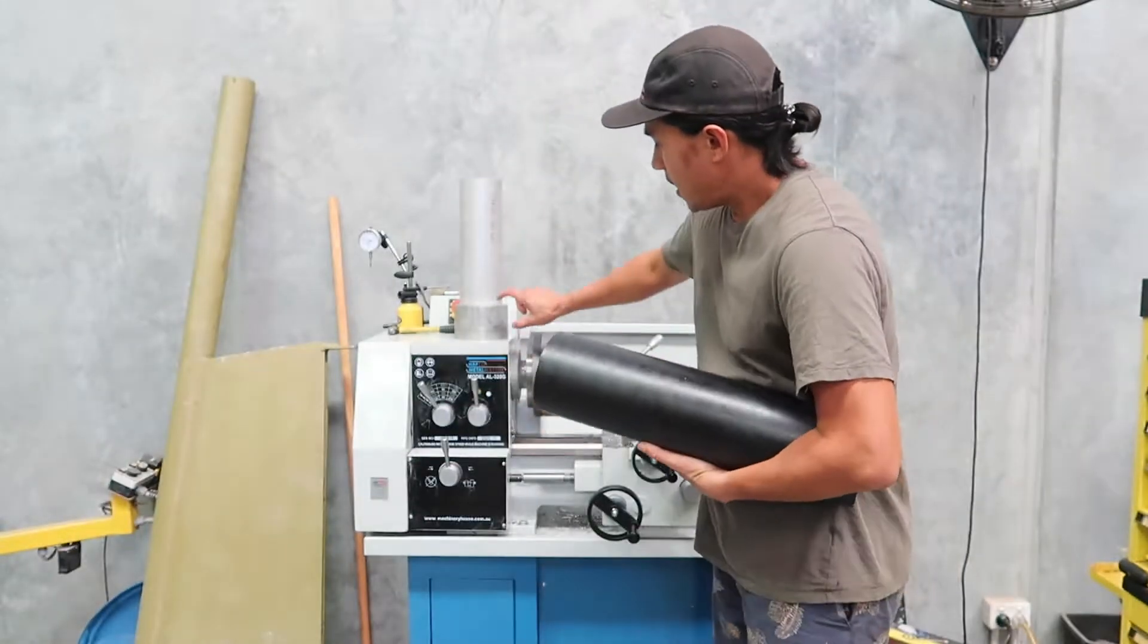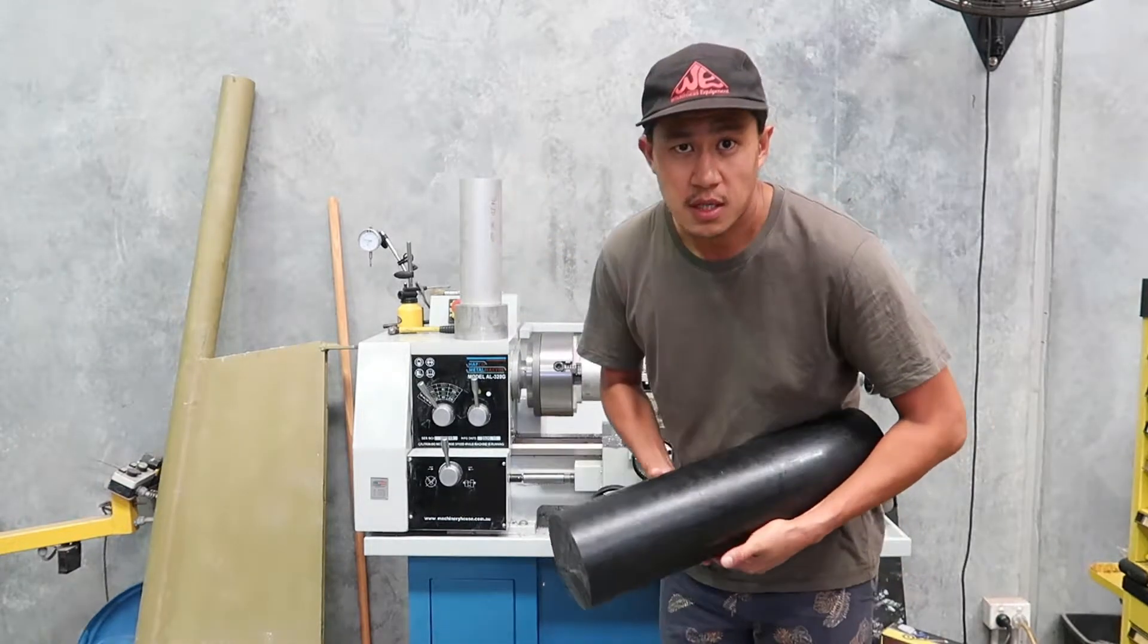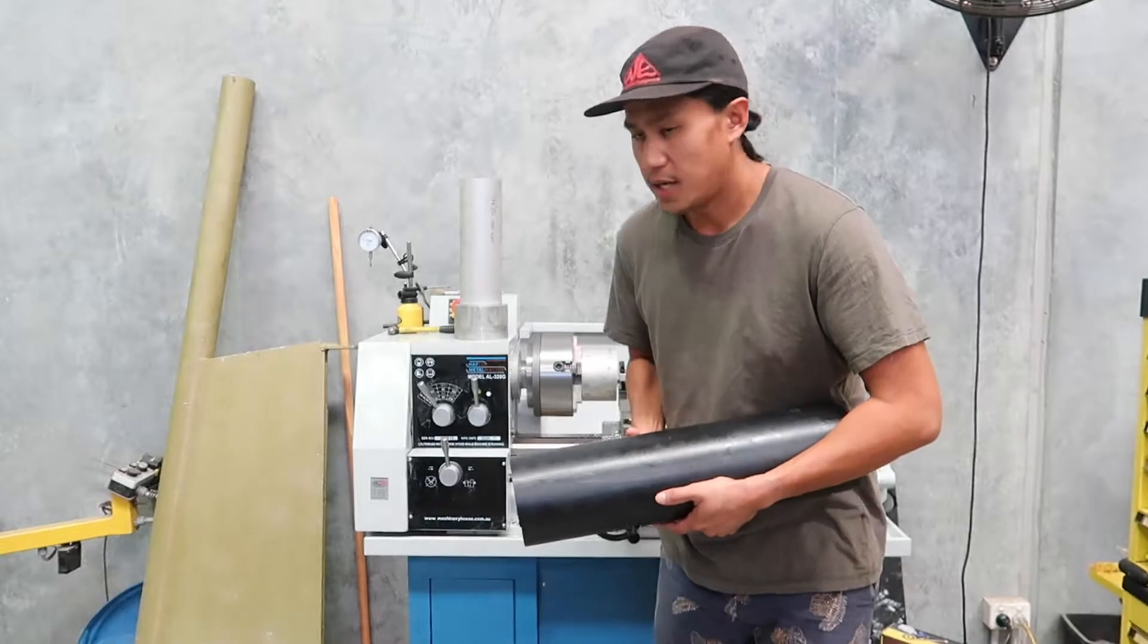The housing is going to be made from this aluminum tube and this is the seal. So I'll show you the drawing of what that looks like.